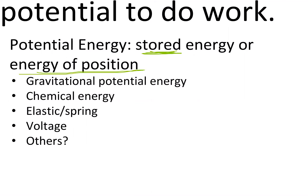Energy of position is what we're talking about when discussing gravitational potential energy. You may have done calculations like PE equals gravity times height times mass of whatever object is above the earth. The higher the object, the more gravitational potential energy something has. You may or may not have looked at chemical energy — that's the energy stored in chemical bonds, and you're probably going to look at that pretty quickly.